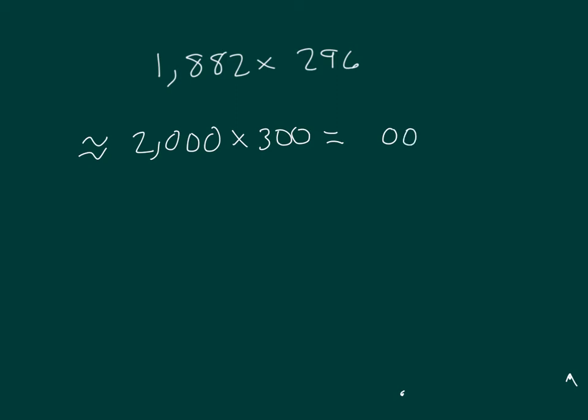5 zeros. And then 2 times 3 is 6. So my estimated product is 600,000.